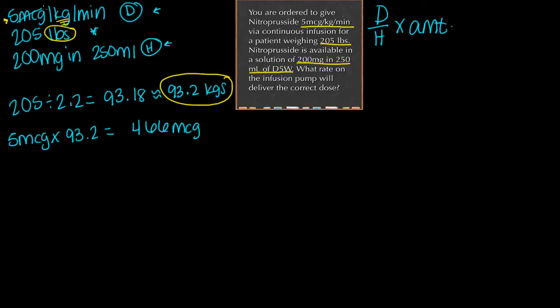That's not the end of my equation. I got my mcg, I did the kilos, now for minutes. I need to give 466 micrograms every minute. We know our final answer is going to be given in mL per hour, so how many minutes are in an hour? I need to do 466 times 60 because there are 60 minutes in an hour. 466 times 60 gives us 27,960 micrograms per hour.